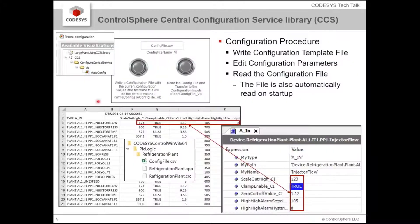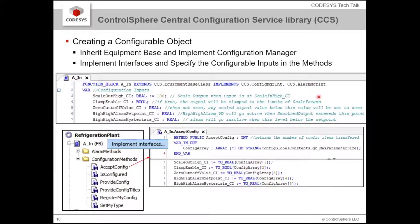So you end up with something that looks a lot like this — each one of these is an instance of that analog input, and they have certain parameters that get written out. The only step we really need to do — actually, I'm going to show you this live. We'll skip this and just show you this one live.